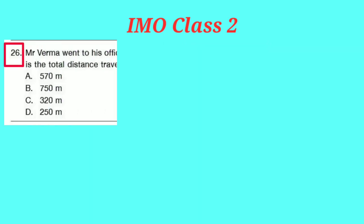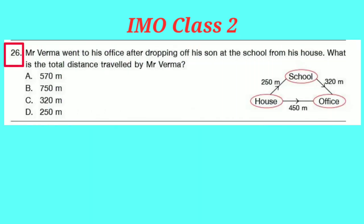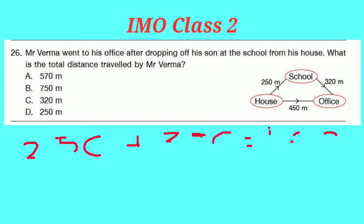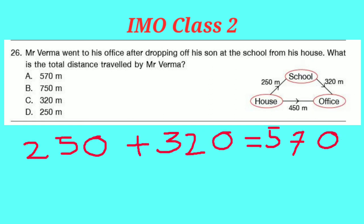Question number 26: Mr. Burma went to his office after dropping his son at school from his house. What is the total distance traveled? Distance from house to school: 250 meters. Distance from school to office: 320 meters. Total: 250 + 320 = 570 meters. Correct option is A — 570 meters.